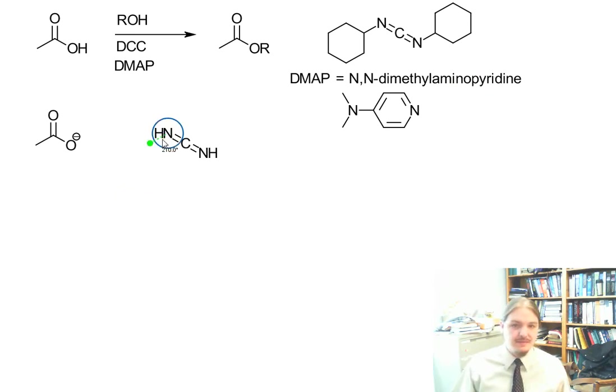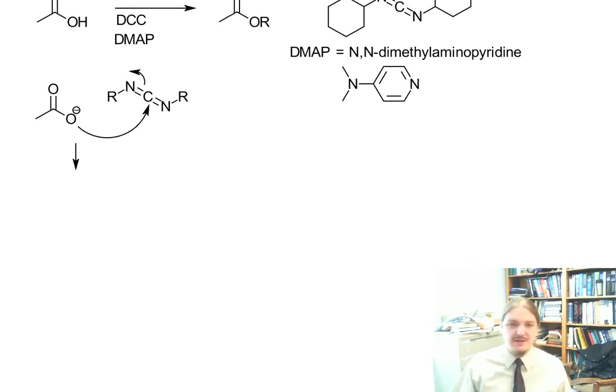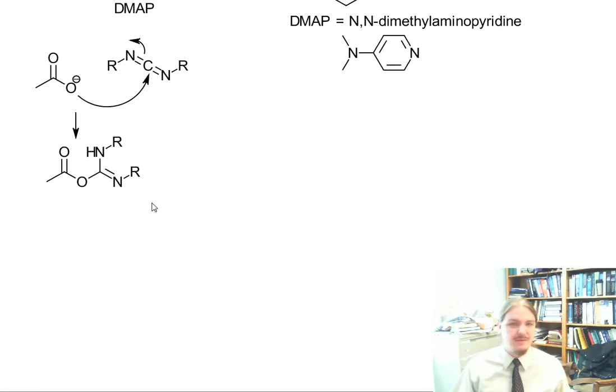We have a generic carbodiimide here. This thing is an electrophile, and so our carboxylate anion can react with it. One of the carbon-nitrogen pi bonds breaks and then you get an intermediate. It picks up a proton, so I'm kind of skipping out on some of the proton transfer steps for the sake of space and time.